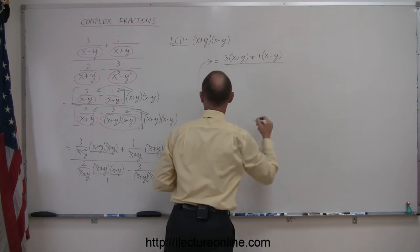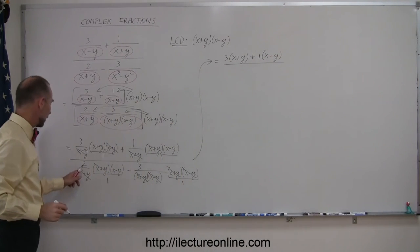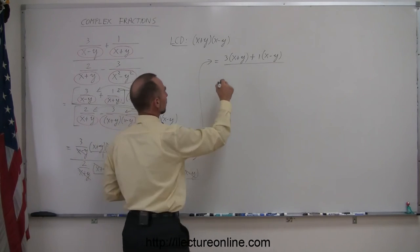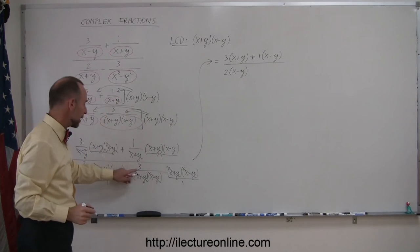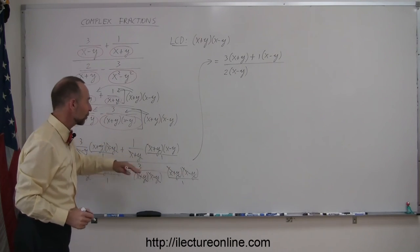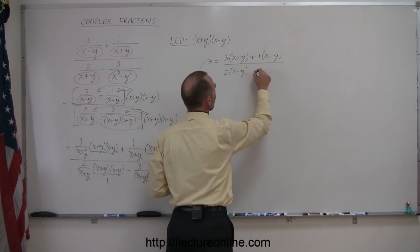In the denominator, we have a 2 times x minus y left, and here we have a minus 3, and since that is canceled out with that, we just have simply the minus 3 left.